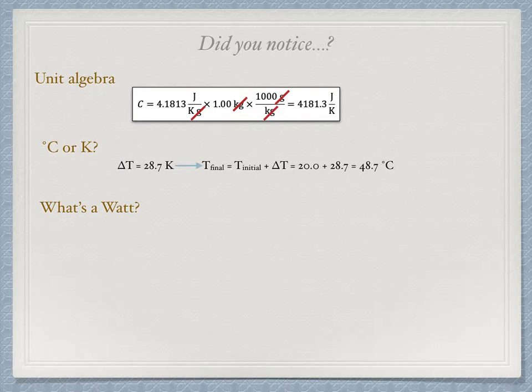We used the term watt and pointed out that it is equivalent to one joule per second. While a joule is a unit of energy, a watt measures the rate of energy flow, which is the property of power. Joules tells us how much energy there is, while watts tells us how fast the energy is being transferred.